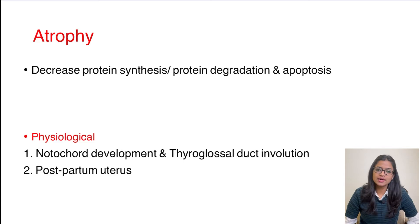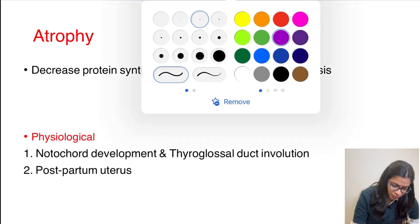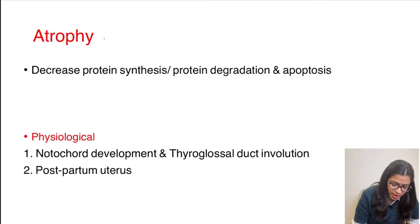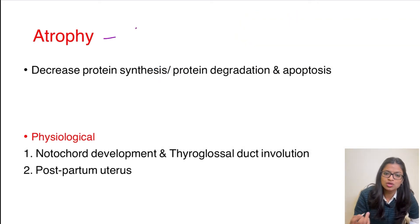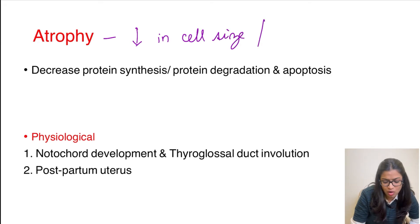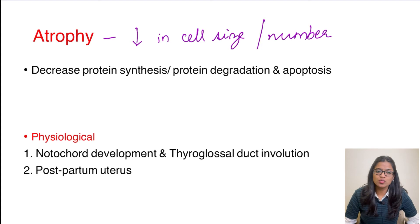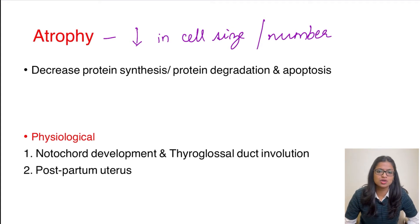We had already discussed hypertrophy and hyperplasia in the previous video, so we will move on to the third cellular adaptation, which is atrophy. Atrophy simply means the opposite of hypertrophy and hyperplasia — that is, decrease in cell size and/or number. Hypertrophy was increased cell size and hyperplasia was increased cell number.